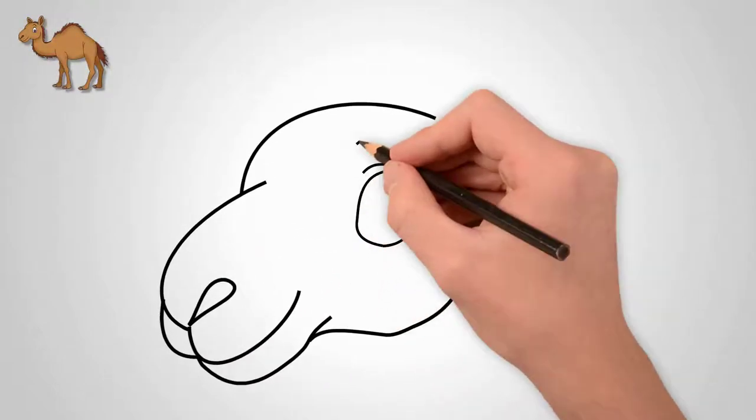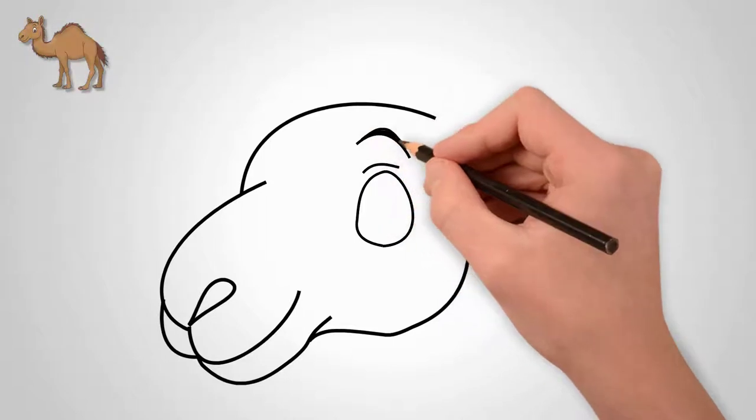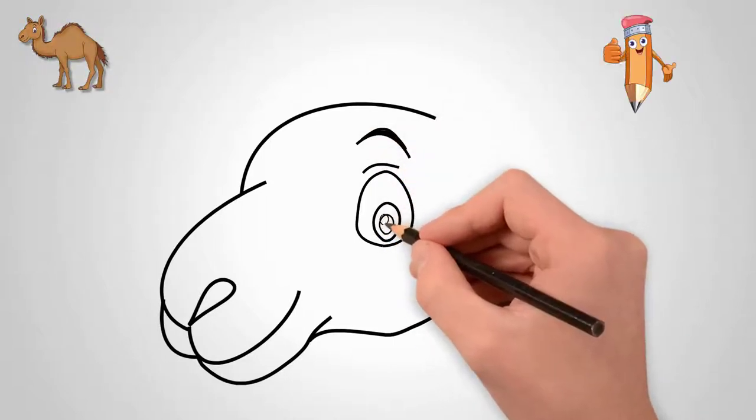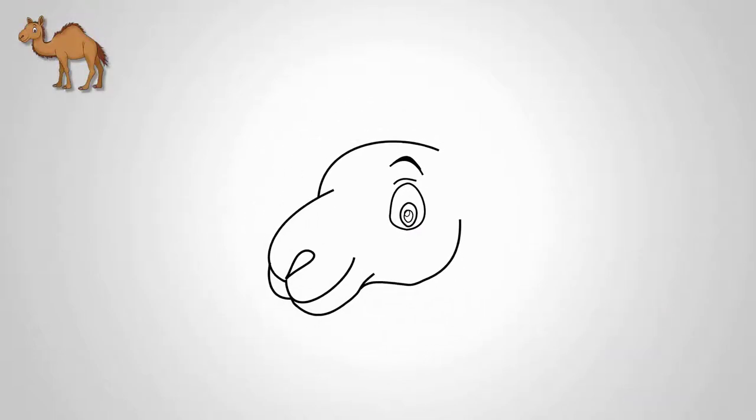Draw the nose and mouth of a camel. Next, draw an eye. The eye is open. Draw the pupil of the eye and an imprint of light.